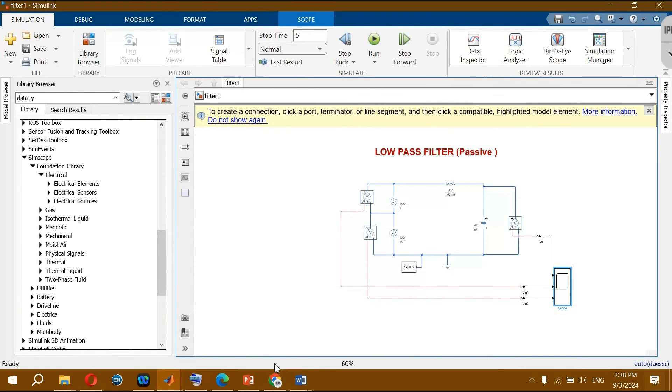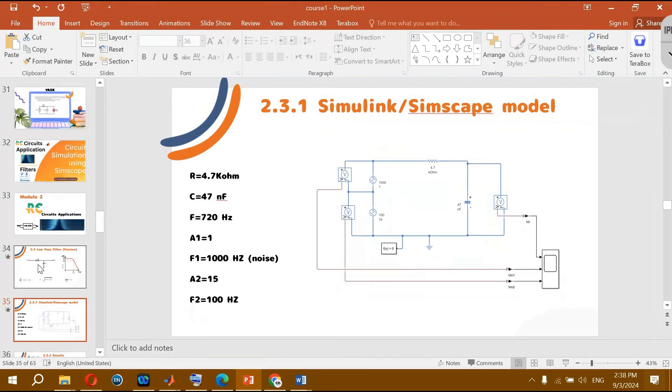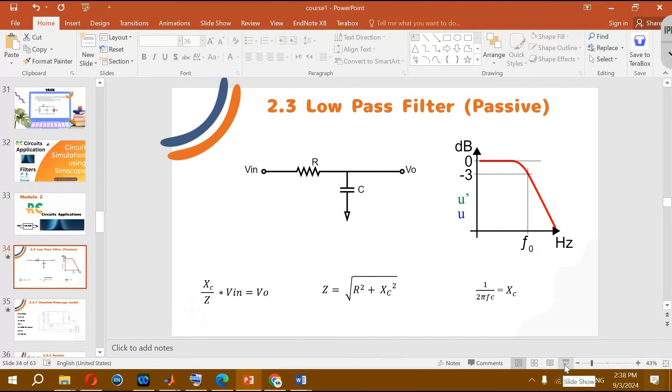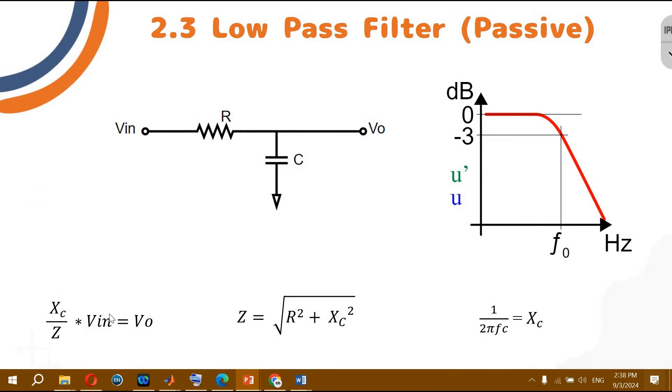To calculate this output voltage you can apply this formula: find Xc from this relation or equation and find Z from this formula, then multiply this value with this value. Then you will get the same value that we have seen in our simulation.